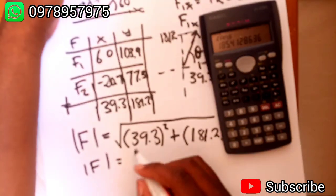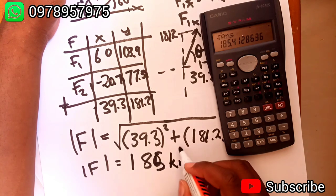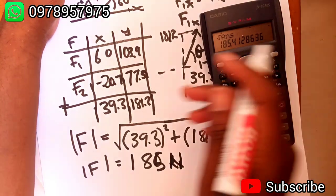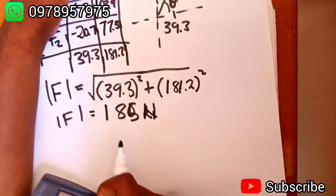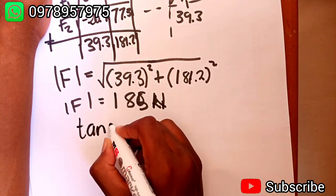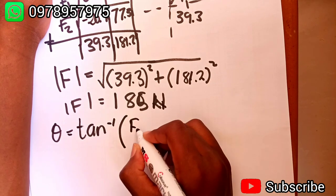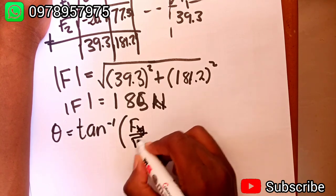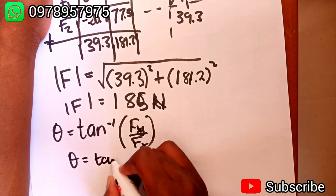This one, that's 182 to the power 2 plus 39 to the power 3 squared. The square root of the answer is going to be 185 newtons. Then the angle will be given by tan inverse.